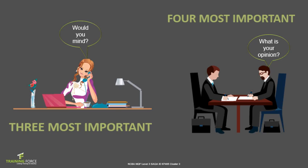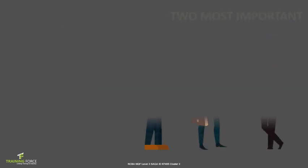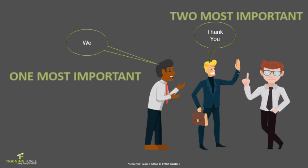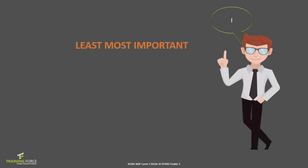The two most important words in a team are 'thank you,' and the single most important word is 'we.' Using 'we' when referring to a task shows it includes everyone and gives a sense of belonging. The least important word is 'I,' because no one is alone in a team. Everybody works together to support and assist in achieving the goal, not for personal gain.